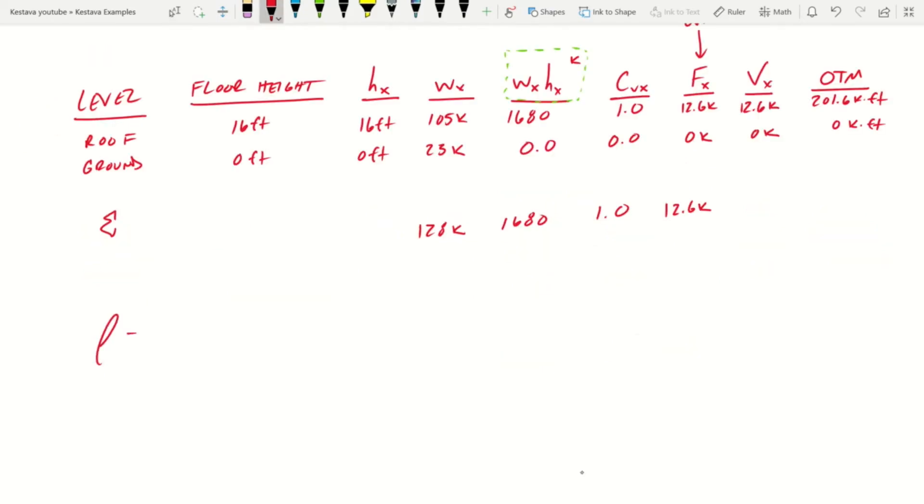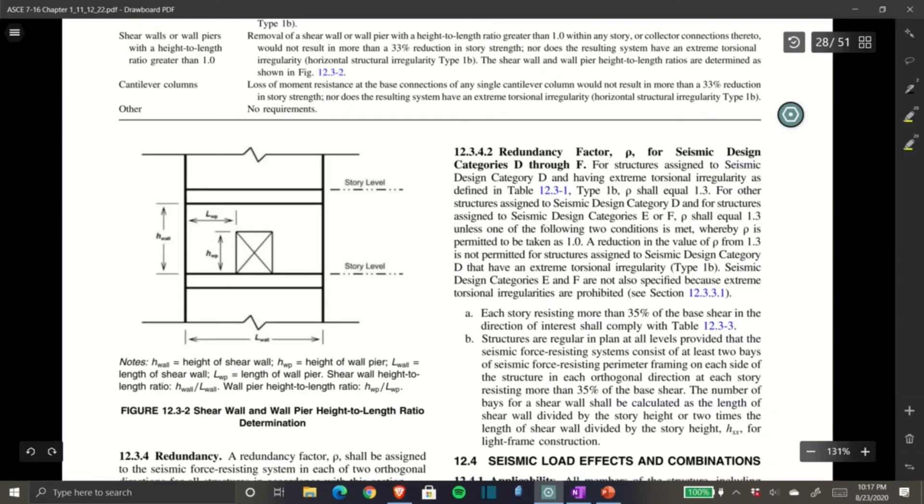Next, we need to find our rho, which is our redundancy factor. And this can be found back in the code in section 12.3.4.2. So let's jump back. So here we are, 12.3.4.2, redundancy factors for seismic design category D through F. Well, so for structures assigned to seismic category D and having extreme torsional irregularities as defined in table 12.3-1, we are assuming basically a non-torsionally irregular structure. So we can ignore that. There, you can read up on that if you'd like, but that's not what we have today. Type 1B, rho shall equal 1.3. So we're not torsionally irregular, so it's not that. For other structures assigned to seismic design category D, which is us, and for structures assigned to seismic category E or F, rho shall equal 1.3, unless one of the following two conditions is met, whereby rho is permitted to be taken as 1.0.